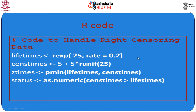We assign a third variable called z-times, defined as the minimum between lifetimes and sensetimes. So from the 25 observations of each, whichever is smaller becomes z-times. Status is then assigned using as.numeric(sensetimes > lifetimes). Entering the status variable gives us which patients are censored or not in a pattern similar to what we saw in the earlier slide.